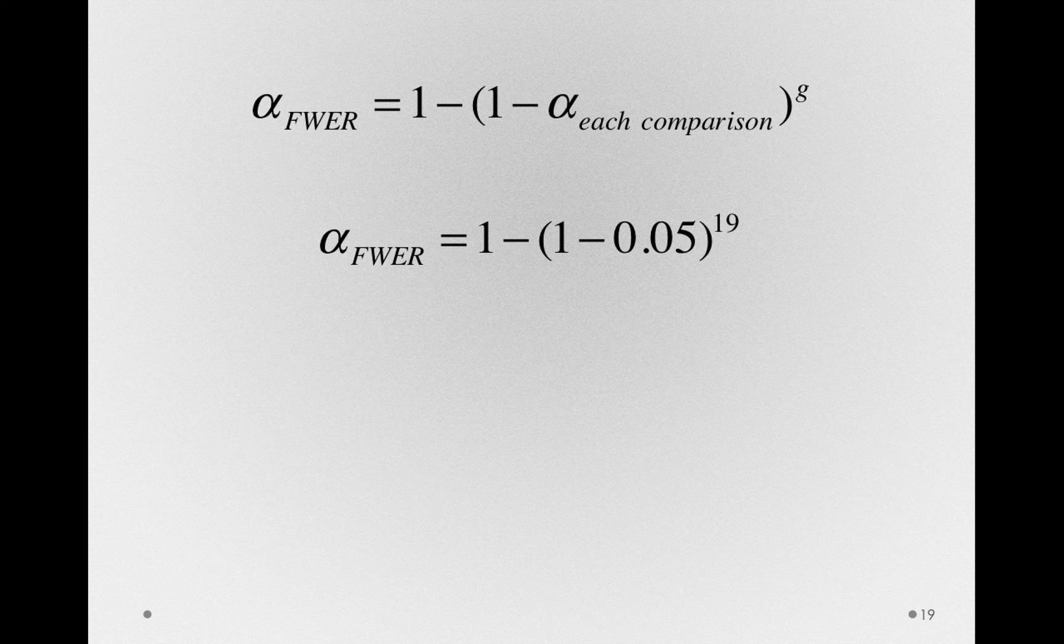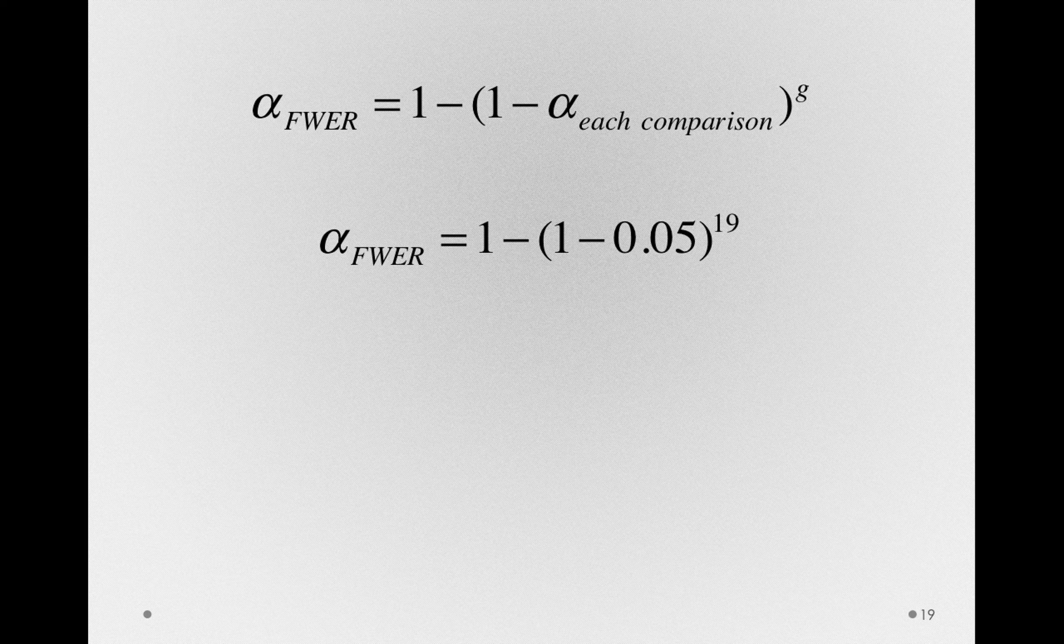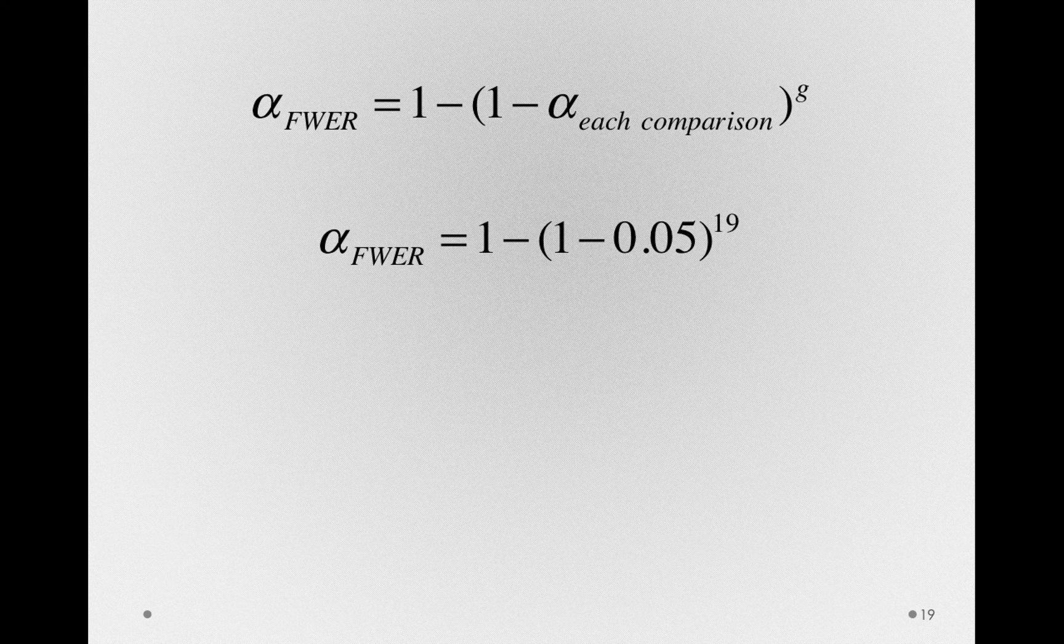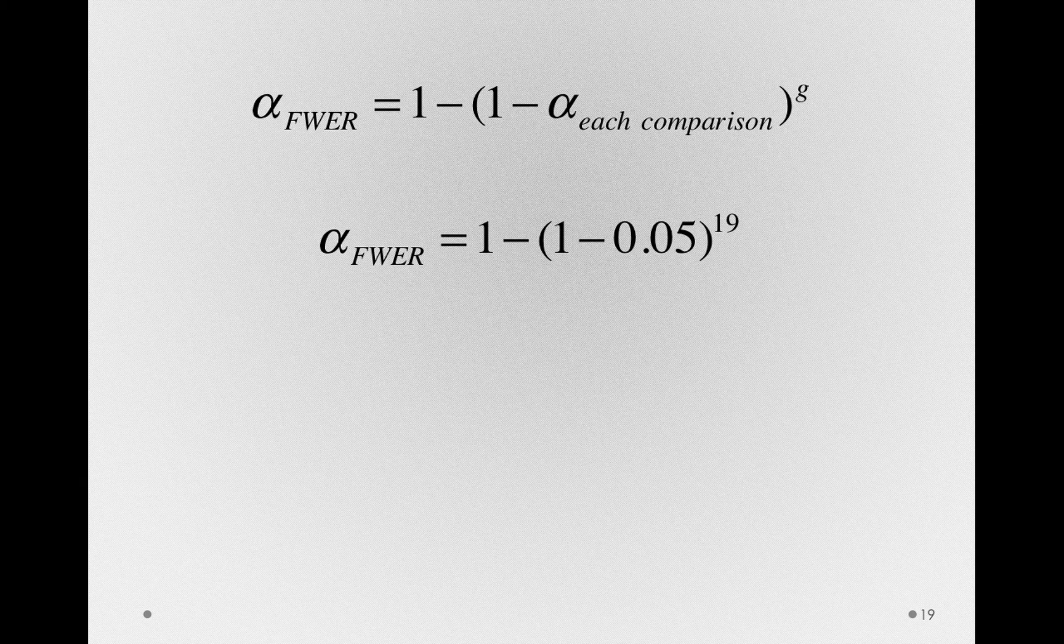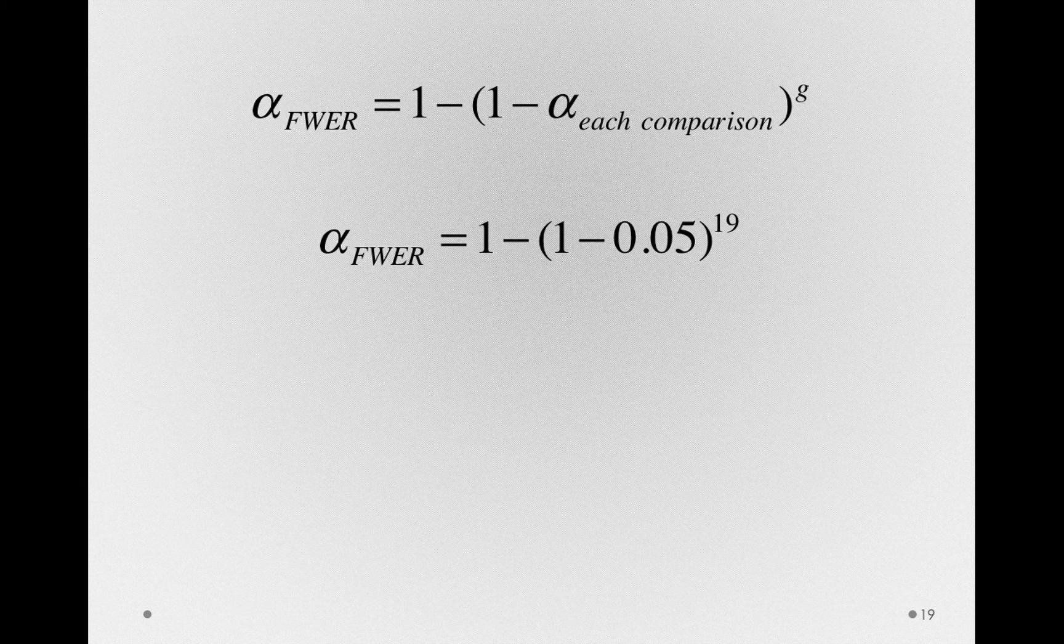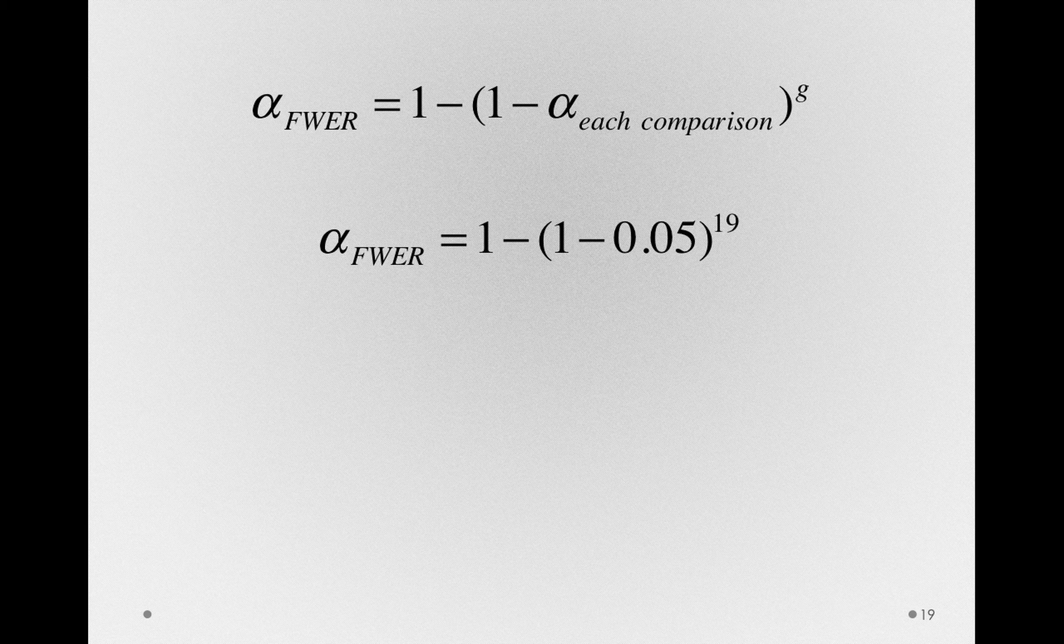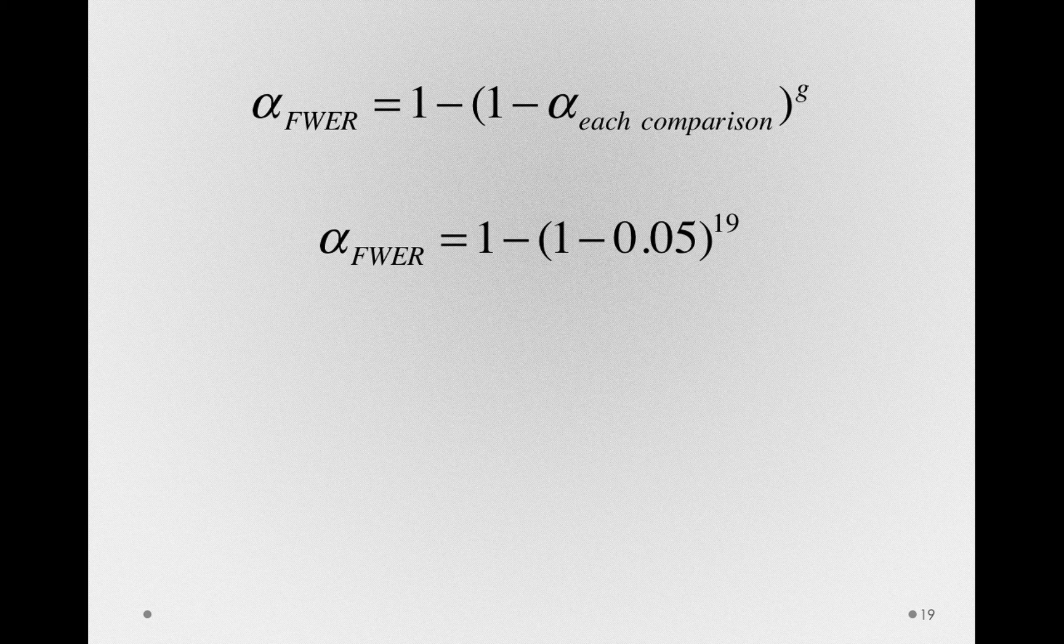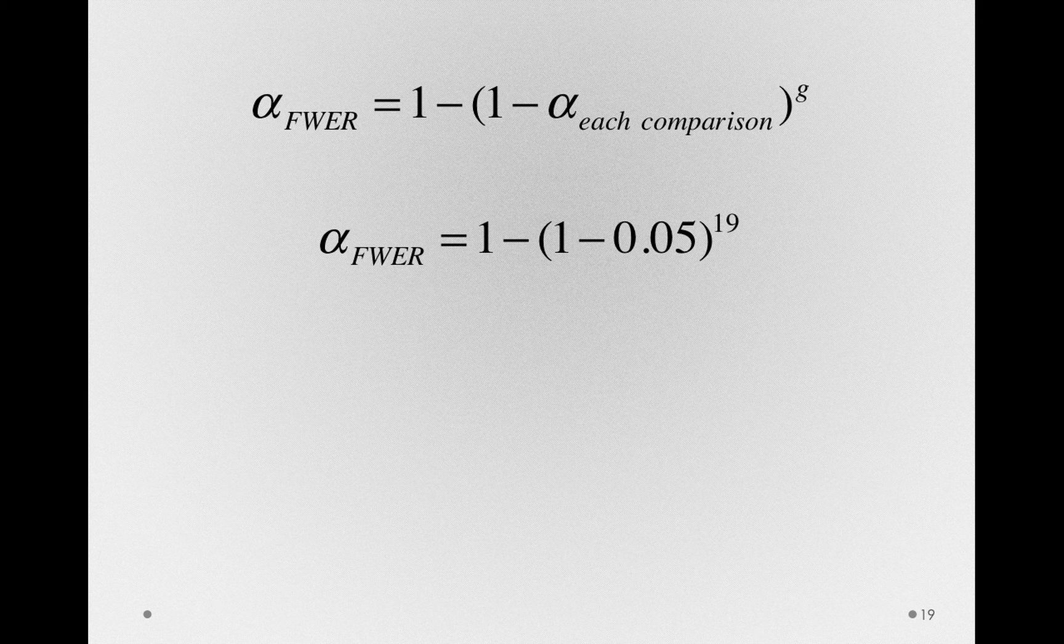The reason we take 1 minus that 1 minus 0.05 to the 19th is we want to know what the probability is of making at least one false alarm. What we have on the interior component, raised to the 19th power, is the probability of not false alarming on 19 occurrences. So, 1 minus that entire quantity is the probability of making at least one false alarm.